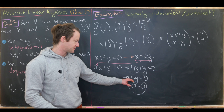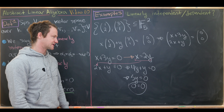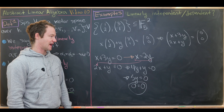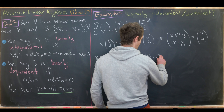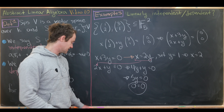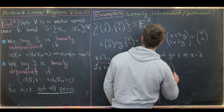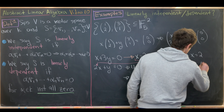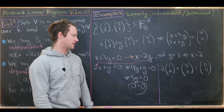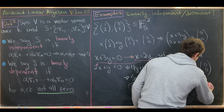Since 0 = 0 holds for any y, there are infinitely many solutions. Setting y = 1 gives x = 2, which is a non-trivial solution. We can verify: 2·[1,2] + 1·[3,1] = [0,0] in F5. This is a linear dependence relation, so these vectors are linearly dependent over F5.